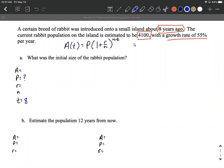But this population over the last eight years has grown up to be 4100 rabbits. So that's what it's grown up to be. So we can put that in for A. And the growth rate is 55% per year. 55%, we can make that into a decimal, 0.55, two decimal places over to do that.